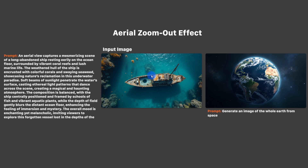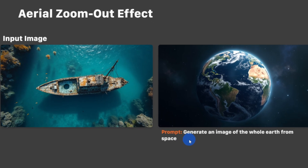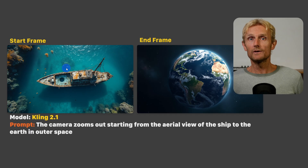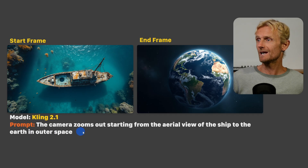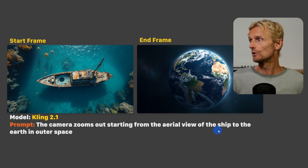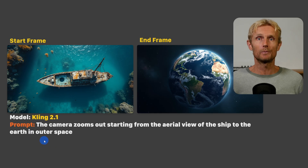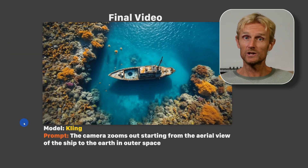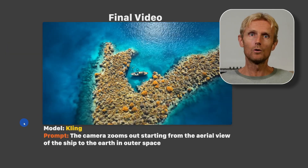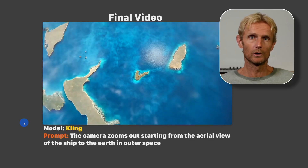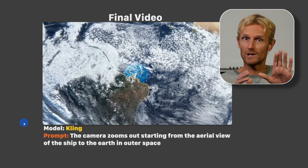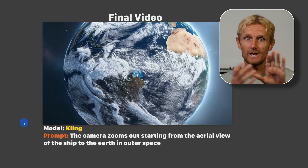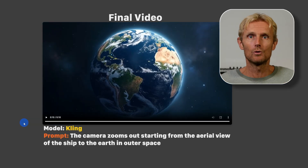I created an image of a boat, used it as an input image for Nano Banana with the prompt 'generate an image of the whole earth from space,' then used the start-to-end frame tool from Kling with the prompt: 'the camera zooms out starting from the aerial view of the ship to the earth in outer space.' The video started off really well but then suddenly creates a sort of double world, likely because there's a layer of earth and water that the AI doesn't know how to deal with.